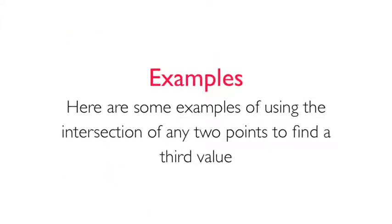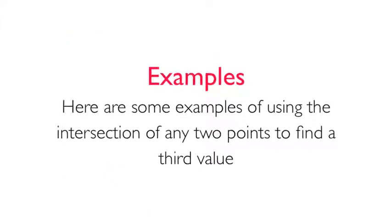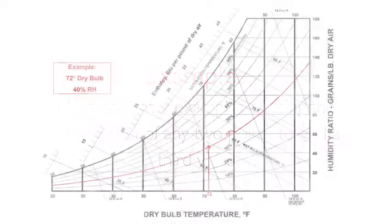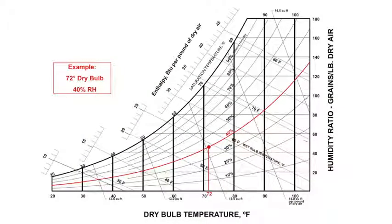Here are some examples of using the intersection of any two points to find a third value. We'll begin with the intersection of 72 degrees dry bulb and 40 percent relative humidity.